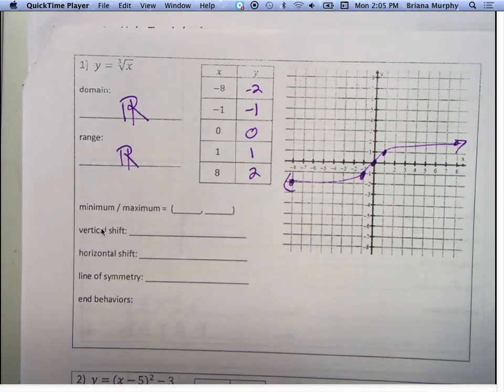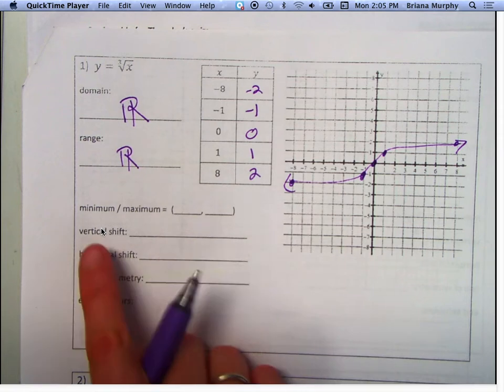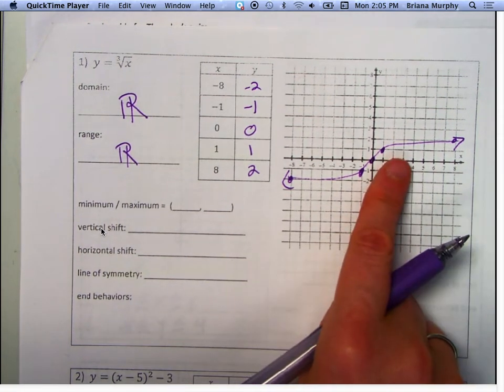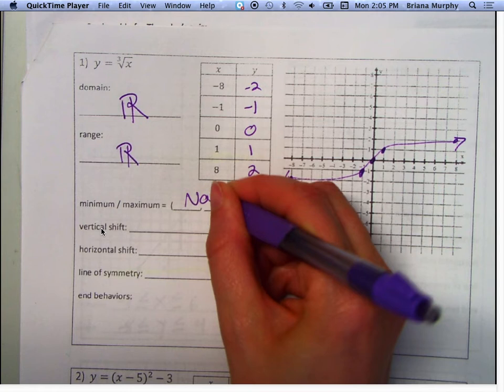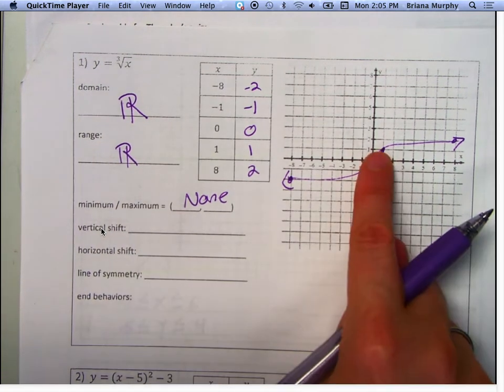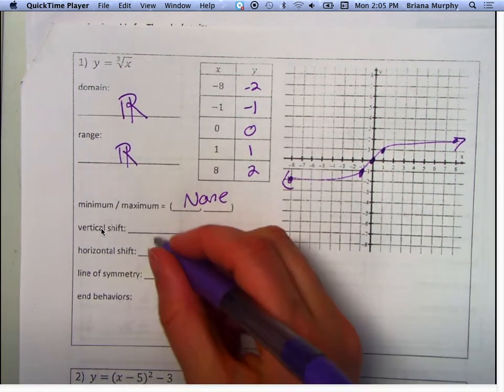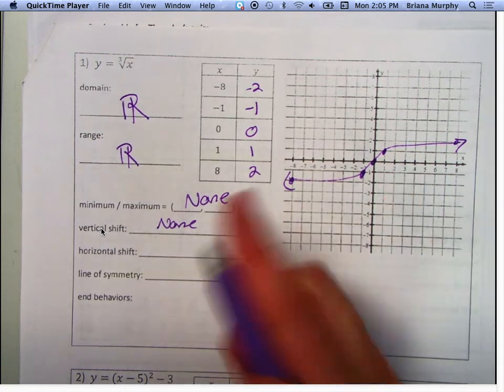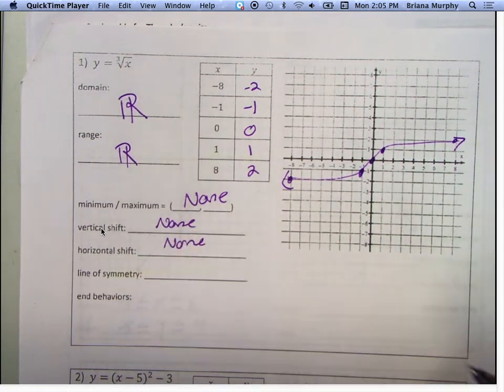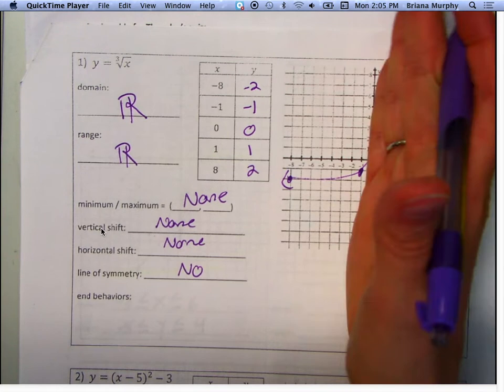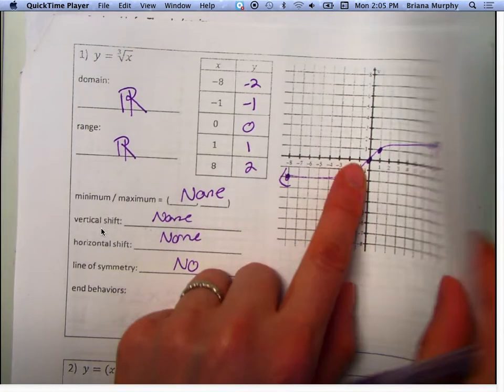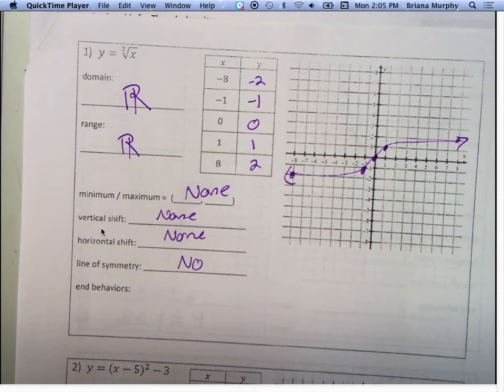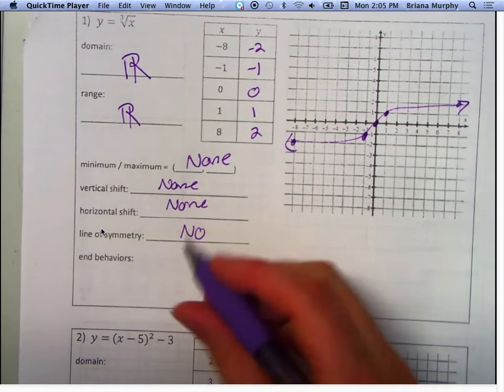Remember, this packet is 2. Okay. Minimum and maximum. Does it have a minimum or maximum? No. None. Did it vertically shift up or down? No. Did it horizontally shift right or left? No. Is there a line of symmetry? No. It's not symmetric. If I folded this in half, do you see how this would go up here and this would go down here? They don't meet each other. So it's not symmetric.